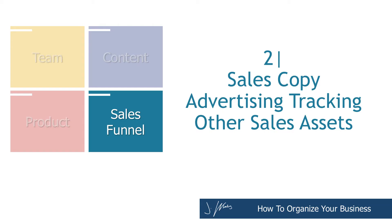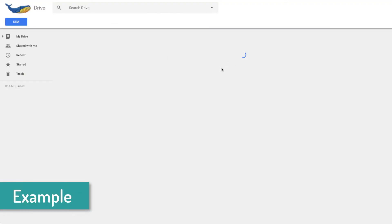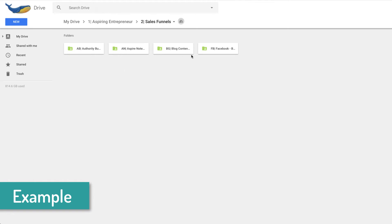Then you have sales funnel, which is everything around selling your product or service. We like to break it down by the different services and products that we offer. Inside of there, we have all of the sales copy, the auto responders, and the advertising. So this handles all of that sales-type stuff. What's really nice about this is if you hire a content writer, you only have to give them access to the content folder — they don't really need the product or sales funnel folder. If you hire a copywriter or someone running your ads, all you have to do is give them access to the sales funnel folder, or the specific sub-folder for the product or service they're working on.